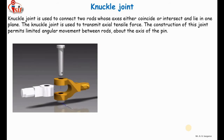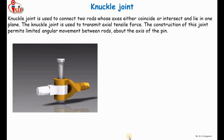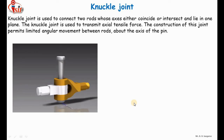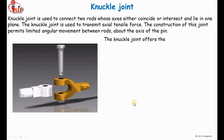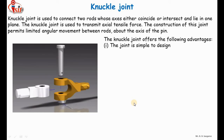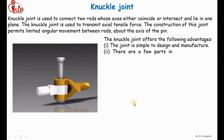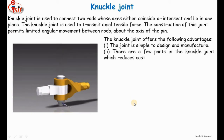The knuckle joint has very few parts: one part called the eye, one called the fork, and one pin. Because of very few parts, the manufacturing and design cost is also less. Also, because of very few parts, the assembly and dismantling of the knuckle joint is easy.